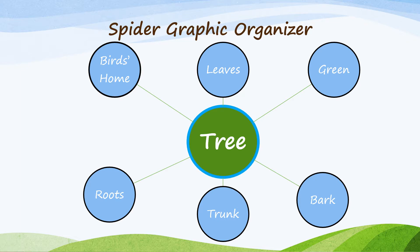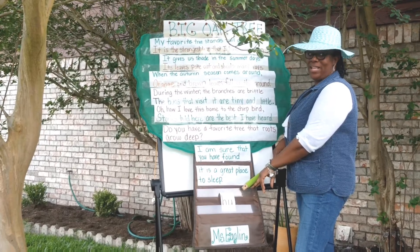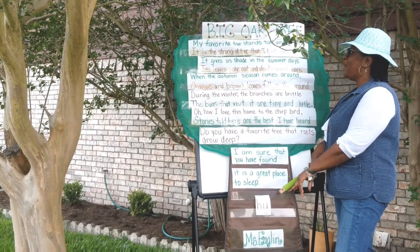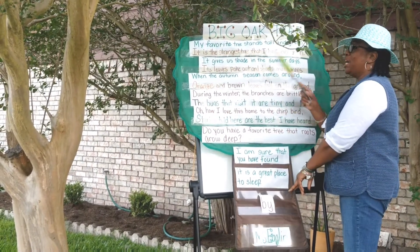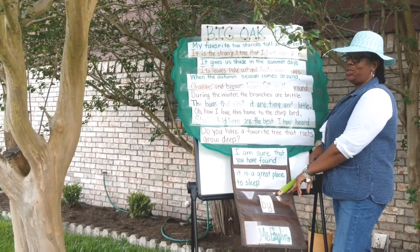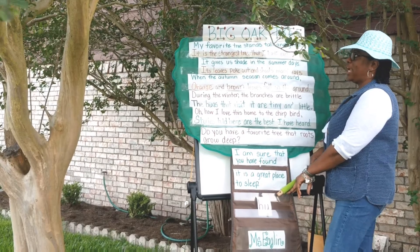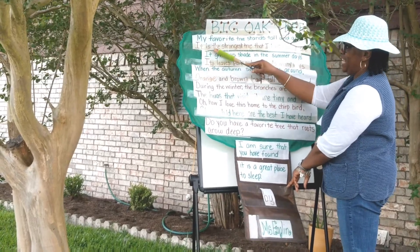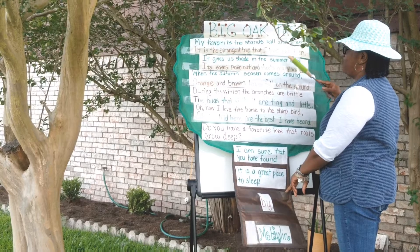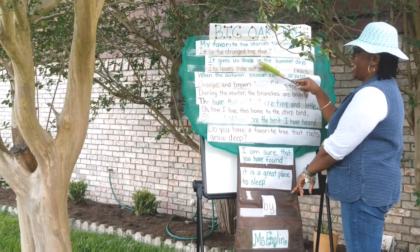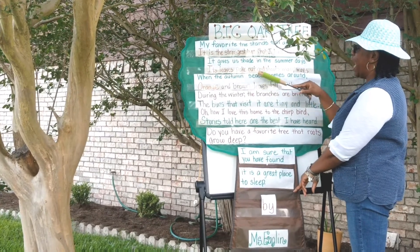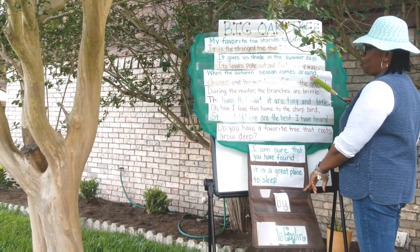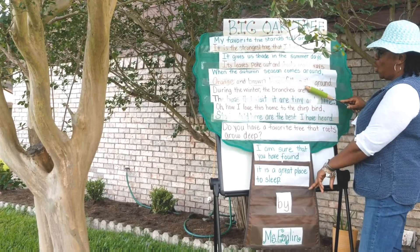Let me show you my poem. Now, boys and girls, I want to share with you my shape poem about the big oak tree. We're not standing by an oak tree, but there's a lovely oak tree that I love at Herman Park. Big oak tree — my favorite tree stands tall and green. It is the strongest tree that I have ever seen. It gives shade in the summer days. Its leaves poke out and shoot many ways. When the autumn season comes around, orange and brown leaves fall on the ground.